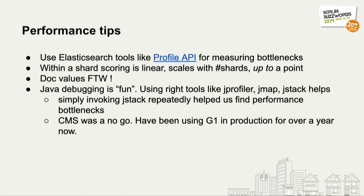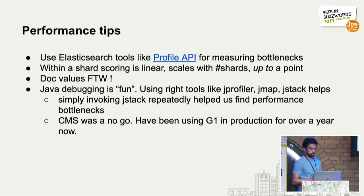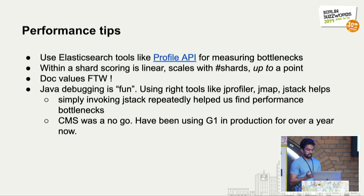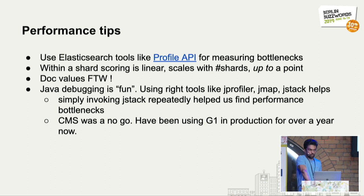Here are some performance highlights. Use the Profile API — it's really cool, it tells you things like aggregations being slow or global aggregations causing issues. As I said before, shards scale up to a point and then there's overhead from just maintaining them. Doc values is good. Doing simple things like jstack when a system is slow tells you what's on top of your stack. CMS did not work for us — we had a dark launch for a few weeks and every single day CMS caused issues, so we switched to G1 GC.